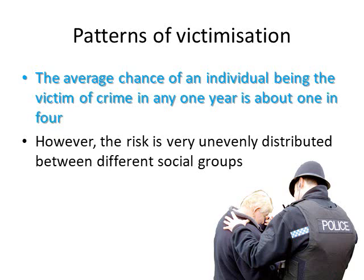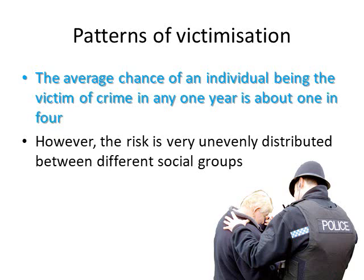In the United Kingdom, when looking at patterns of victimisation, the average chance of an individual being a victim of crime in any one year is about one in four. However, the risk is very unevenly distributed between different social groups — that one-in-four figure hides the reality of what it means to belong to certain groups. The poor — the working class and underclass — young people under the age of 21, and ethnic minority groups, who are more likely to suffer racist discrimination, face a greater risk of victimisation.